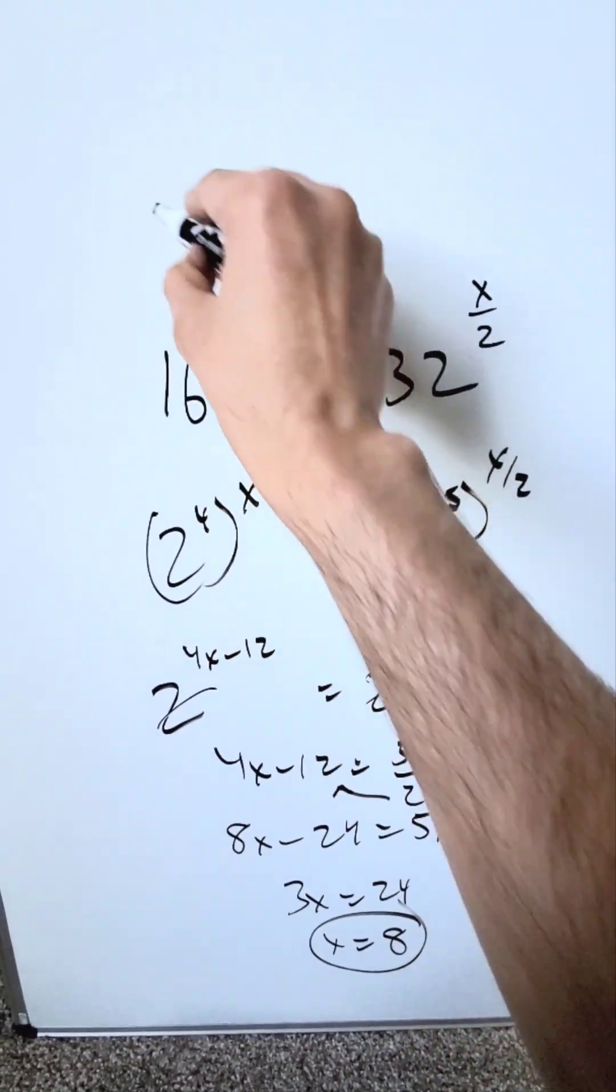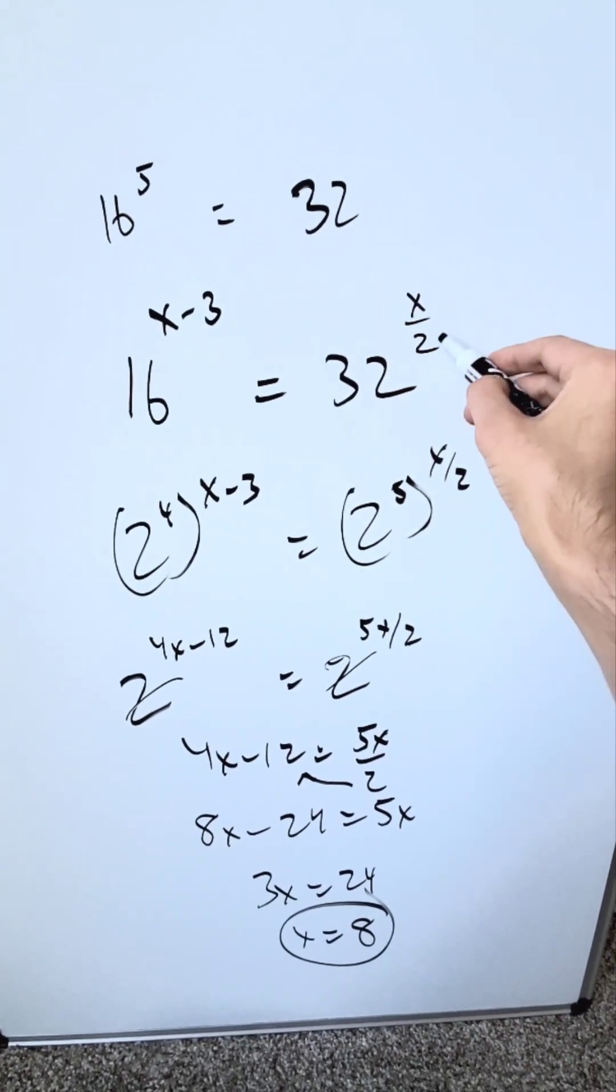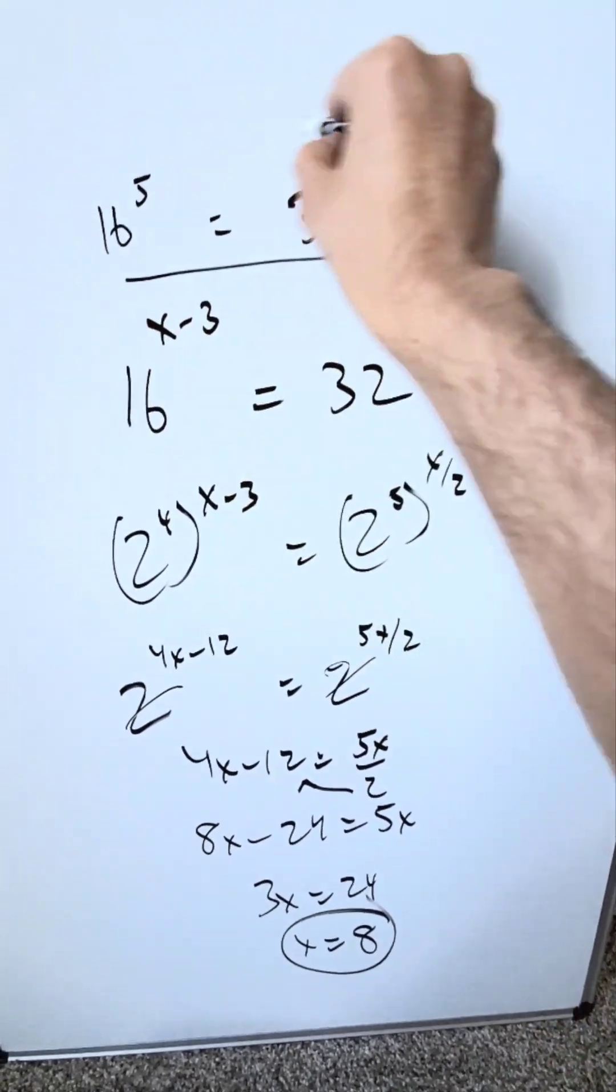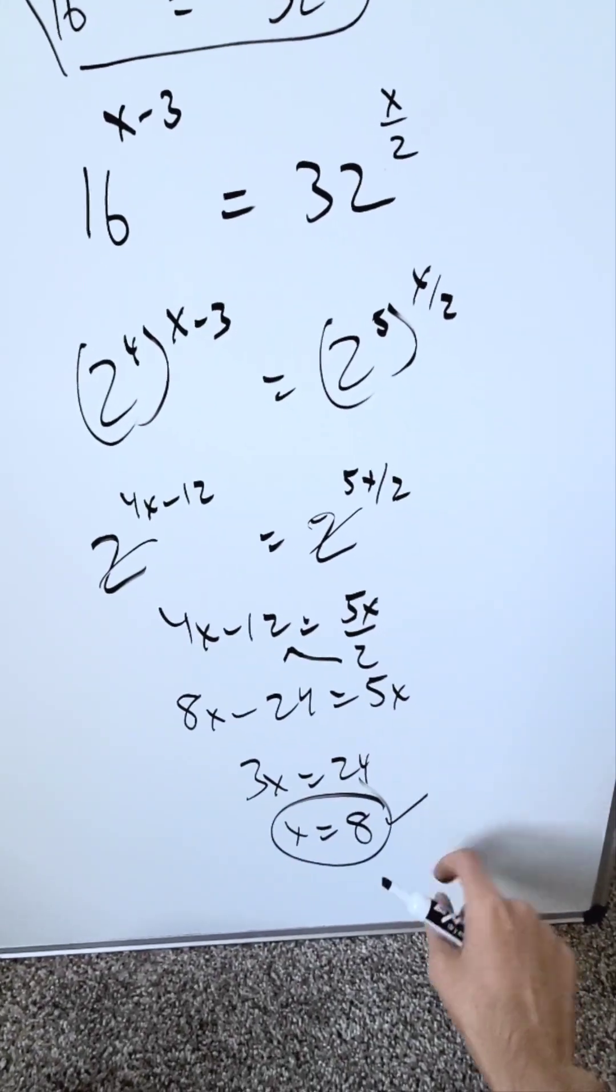You're in essence saying you have 16 to the power of 5. It would be equal to 32 to the power of 8 divided by 2, which is 4, and indeed it will be correct. Run this on your calculator. It will be correct. Your answer 8 over here is good.